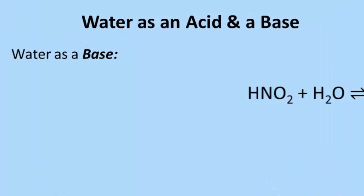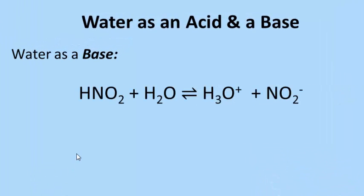Let's think about water as a base. When we put water with an acid — such as nitrous acid — water accepts a proton, so here we'd say water is the base and nitrous acid is the acid. Each reaction we go through will be balanced for atoms and for charge. For example, the charge on the reactant side is zero, and the charge on the product side is zero as well. If we look at the charges — plus one and minus one — they sum to zero, which equals the charge on the other side.